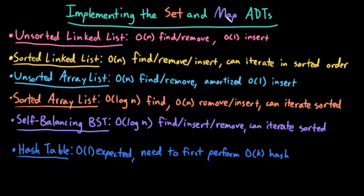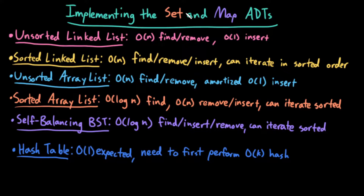How can we actually implement the set and map ADTs? In this discussion, I will only talk about how we implement the set ADT. The reason for this is that any given set ADT implementation can easily be transformed into a map ADT implementation by just storing the key and the value instead of just storing the key. In practice, it's very common for people to only implement the map ADT and then have a wrapper set ADT implementation that simply stores dummy values. Either way, those two thought processes are equivalent, so we're just going to talk about storing a set of elements.